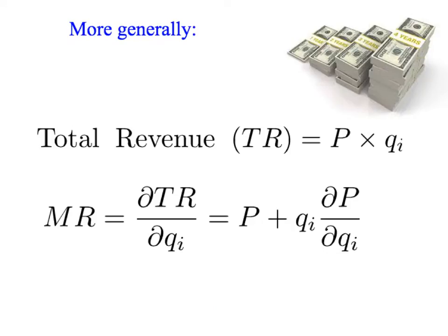More generally, marginal revenue is the derivative of total revenue with respect to quantity — the change in total revenue with a change in quantity. The formula has two parts. First, the price you receive when you sell an extra unit: if you sell an extra unit for $10 you get an extra $10, for $100 you get an extra $100. So part of marginal revenue is clearly equal to the price. But there is a second term.